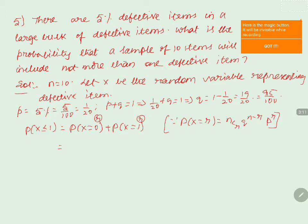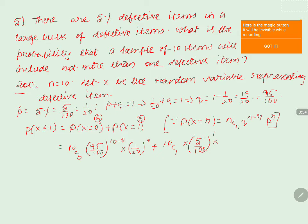This can be written as 10C0 into (95/100) to the power of 10 minus 0 into (1/20) to the power of 0, plus 10C1 into (5/100) to the power of 1 into (95/100) to the power of 10 minus 1.